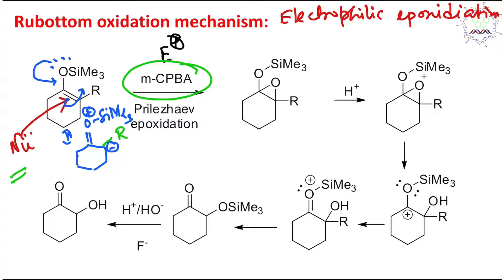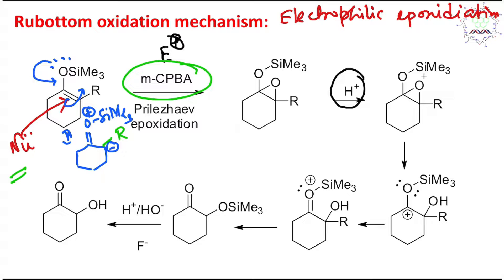Simply, the first step is the epoxidation of the alkene — this gives the epoxide, with other substituents remaining the same. The second step is treatment with acid. Remember, students, epoxides are three-membered rings and they are strained. This epoxide ring opening can be achieved under three conditions: acidic, neutral (Lewis acidic), or anionic (basic). In this case, we use acid. So the oxygen atom of the epoxide will act as a base.